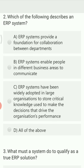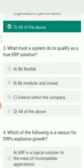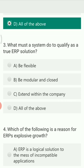The third MCQ is: what must a system do to qualify as a true ERP solution? Option A is be flexible, Option B is be modular and closed, Option C is extend with the company, and Option D is all of the above. The right option is Option A — it should be flexible.